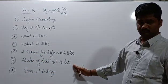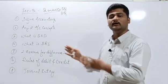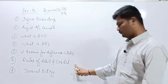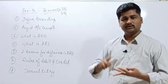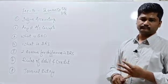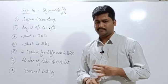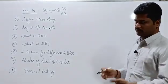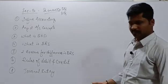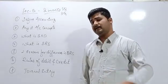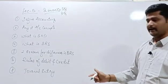Number six: Rules of Debit and Credit. You need to write the rules of debit and credit. This applies to accounts of asset, liability, expense, income, and capital — these five types of accounts and their rules of debit and credit.